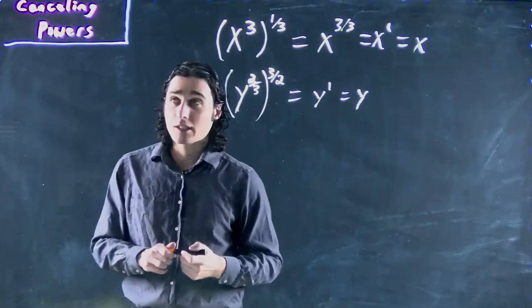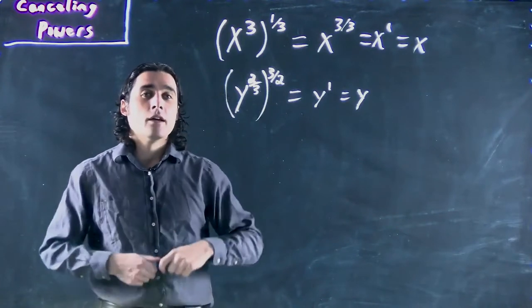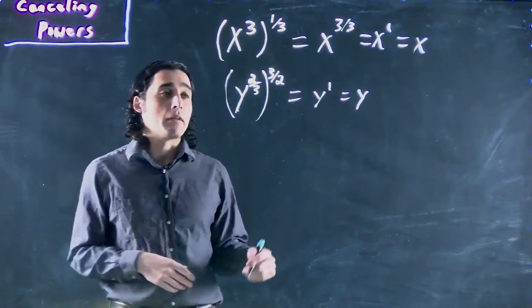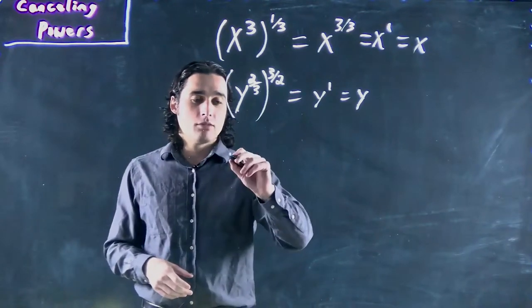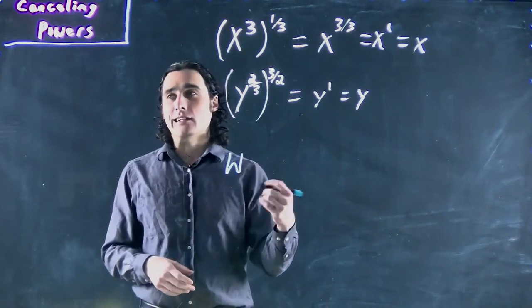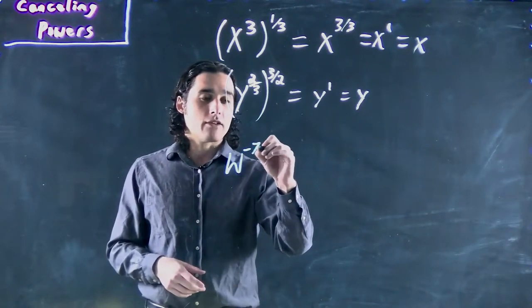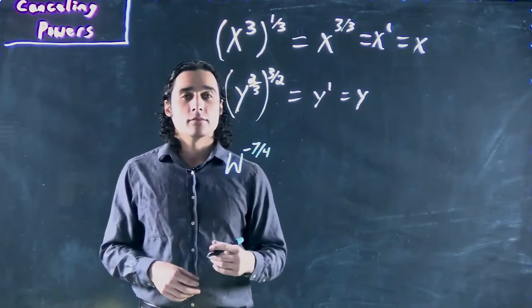And I'm going to switch markers just because that one is super squeaky. But one thing that might throw someone off is what if I see a negative exponent? So I've got w to the power of negative 7 over 4. What do we do?